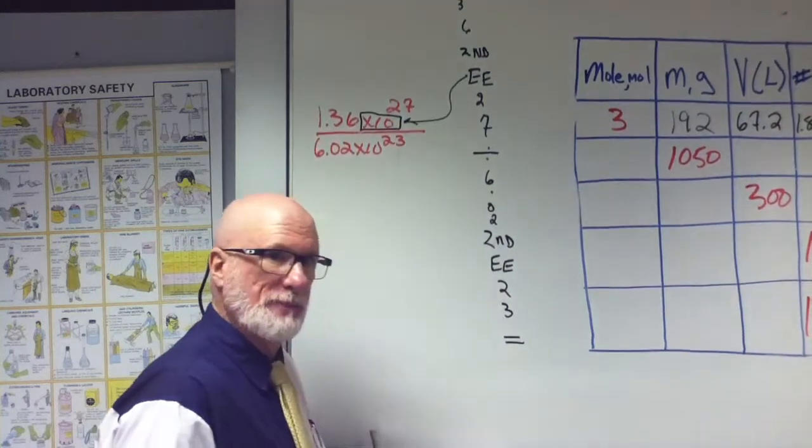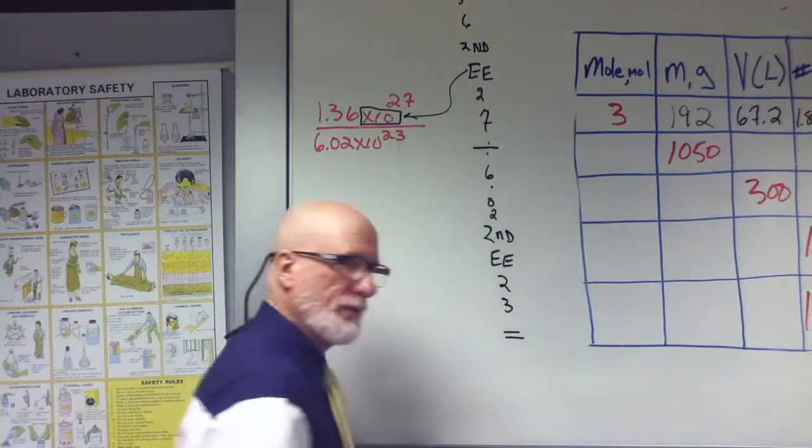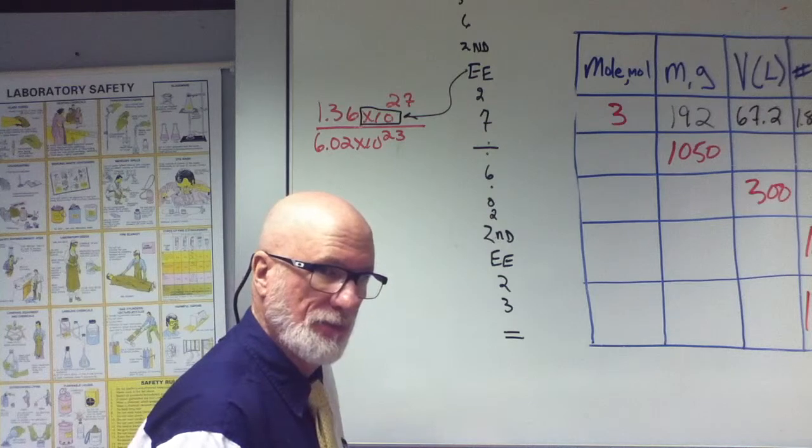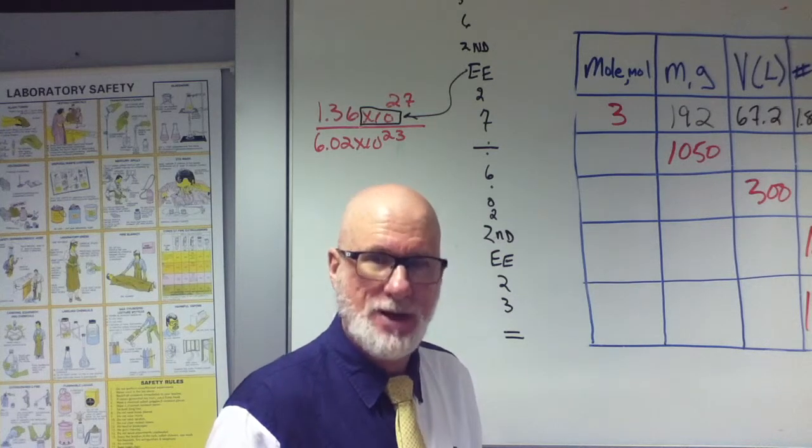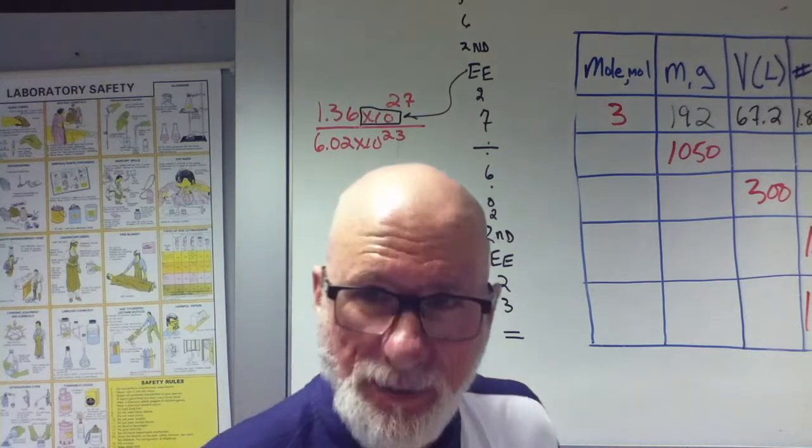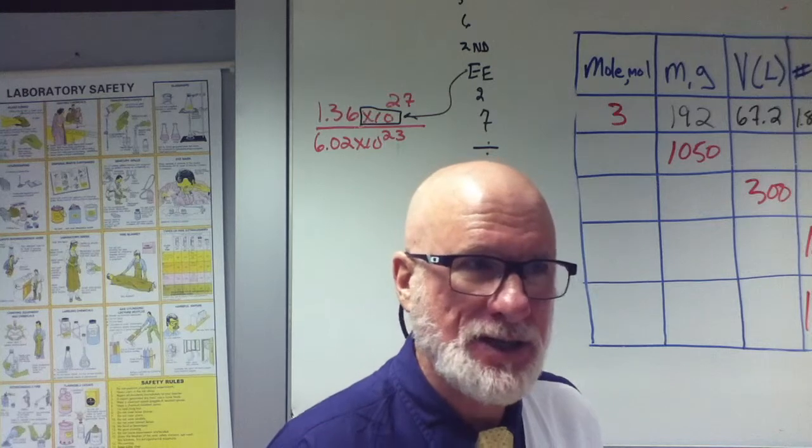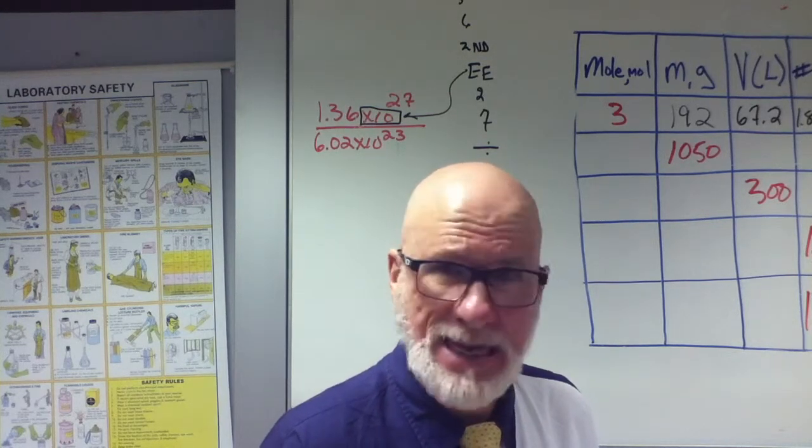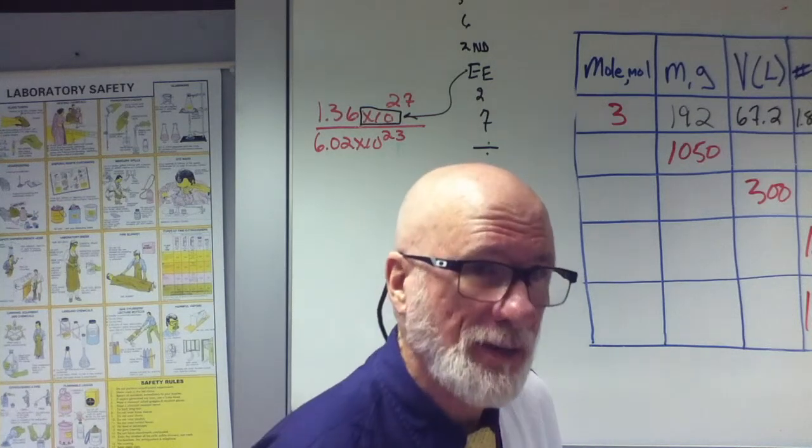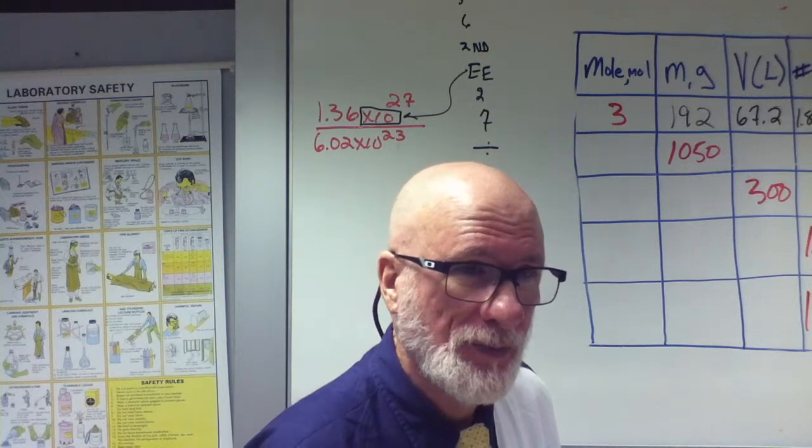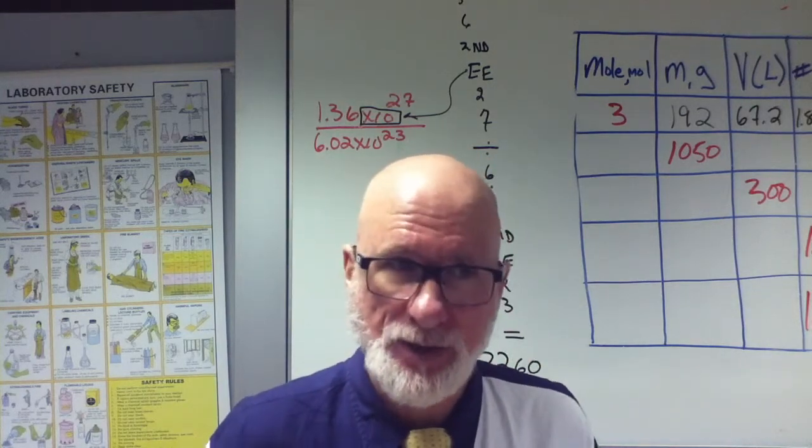Now, your answer should be rounded to three significant figures. What did you get? Isn't it 2259? So what is it in three significant figures? 2260.